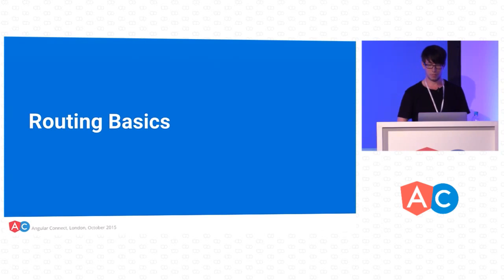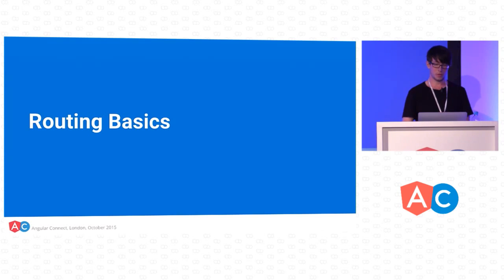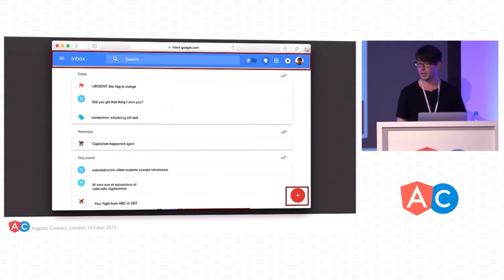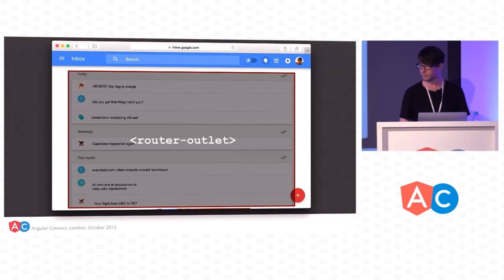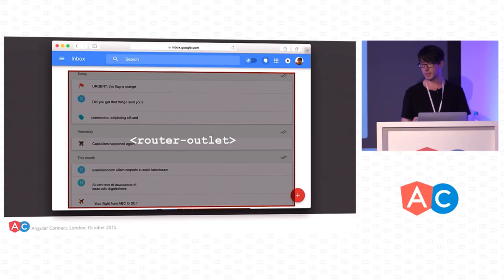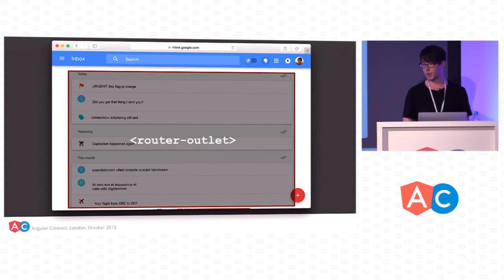This is a good point to introduce routing basics. We just need to switch between different views, update URLs, make sure back/forward buttons work as expected. If we look at this email client, we have a couple parts on the page that stay the same, and then this part in the middle that changes depending on which route we're on. We call this part in the middle ng-outlet. It's basically the same thing as ng-view in Angular 1, but it's tied to components instead of just a global thing.